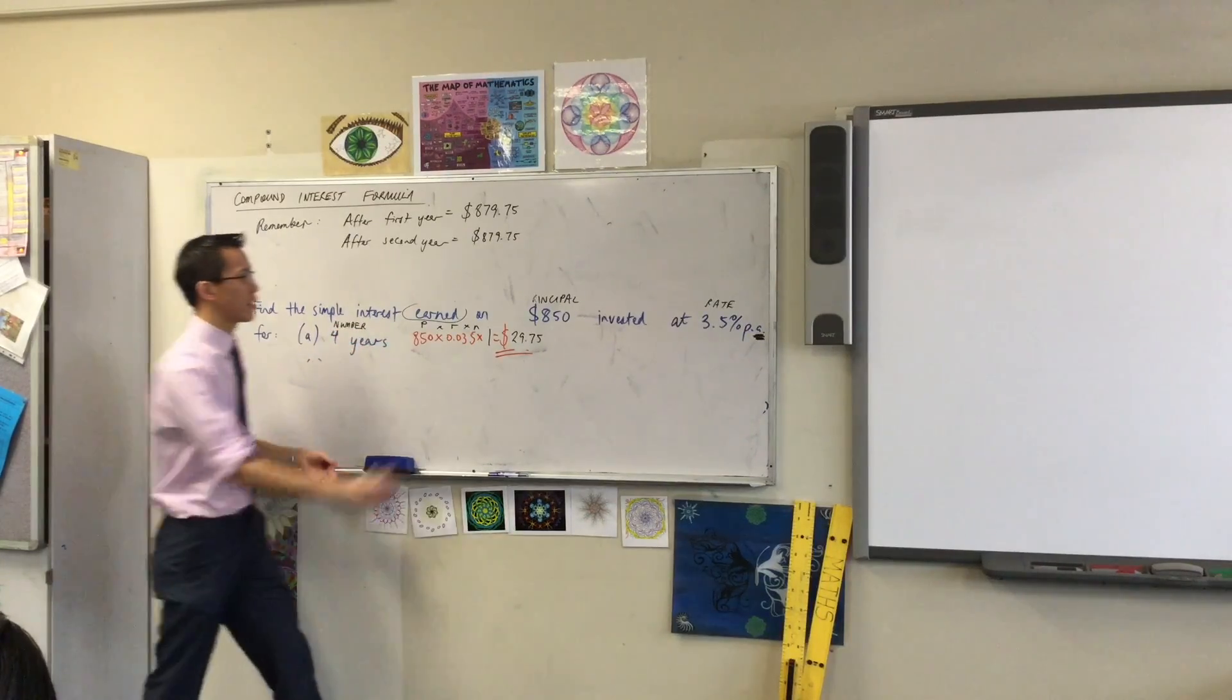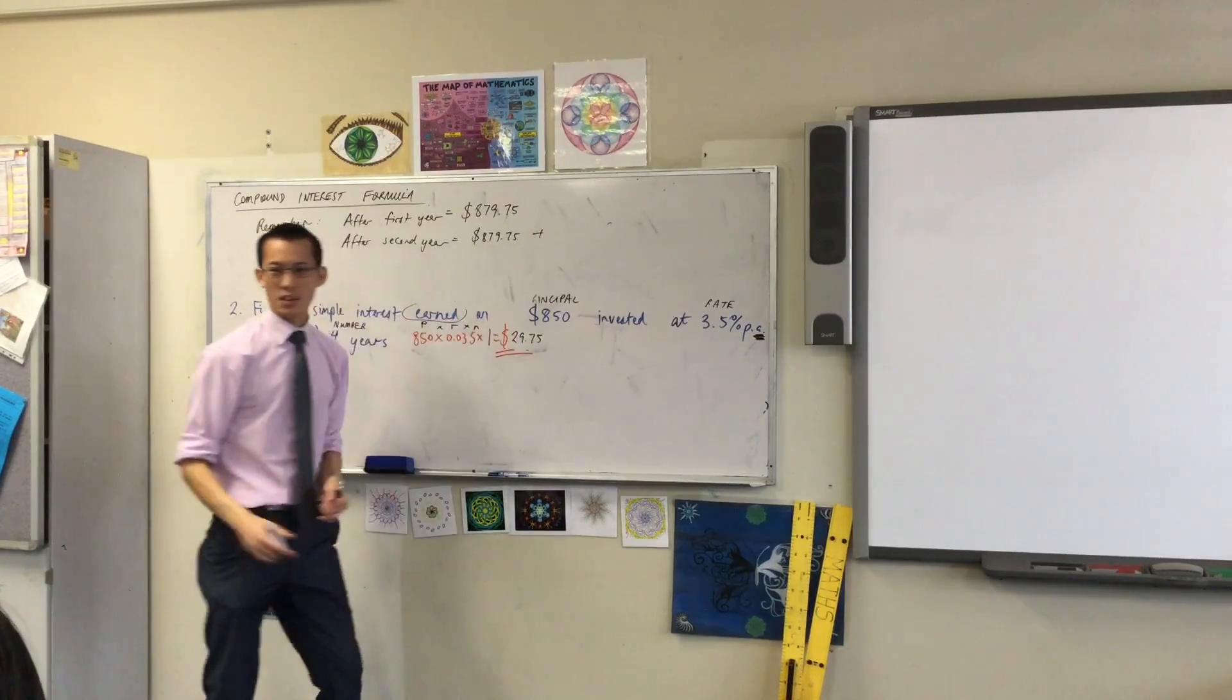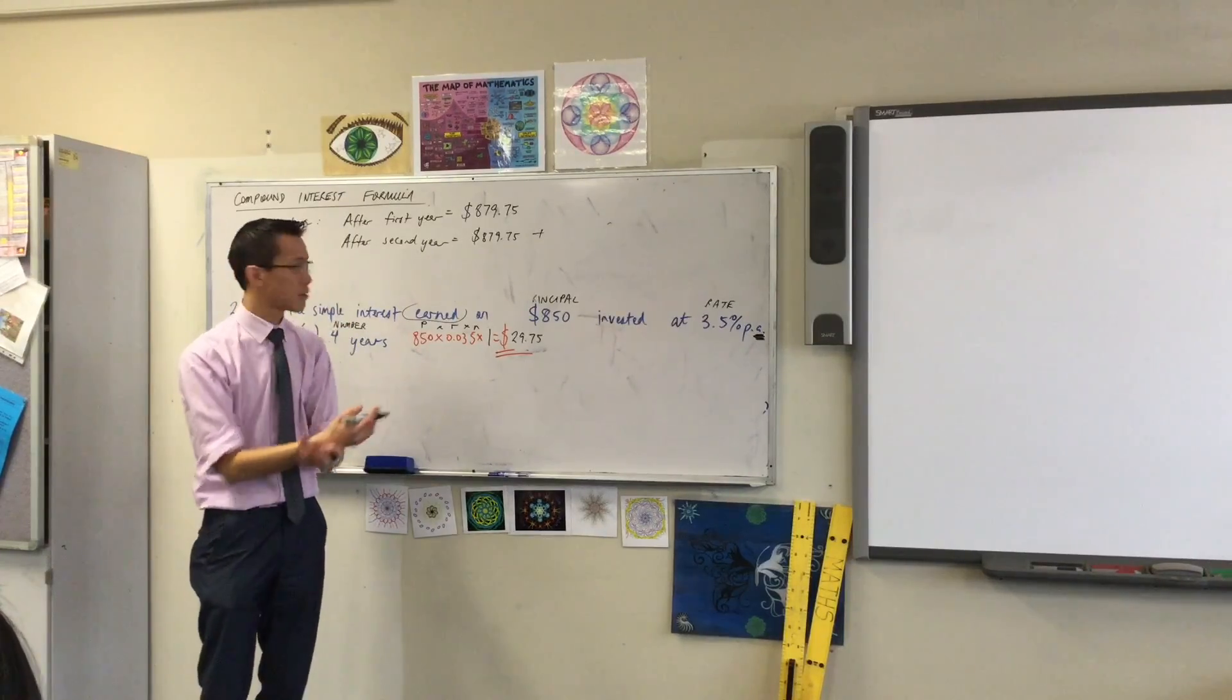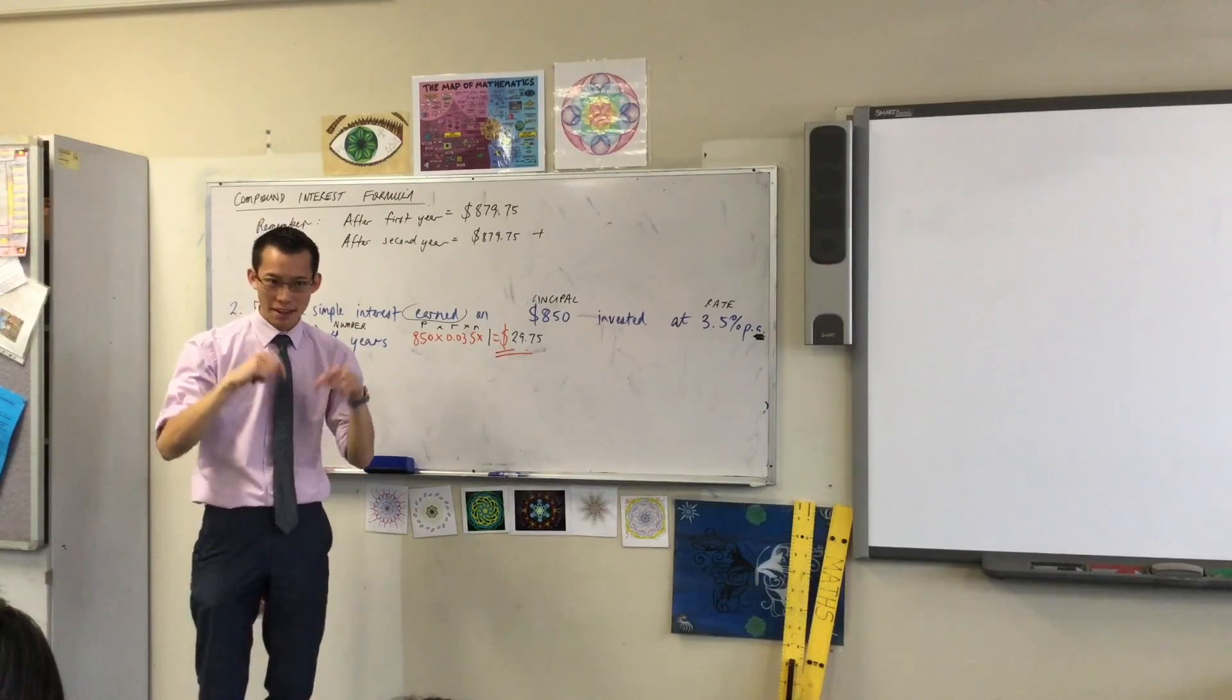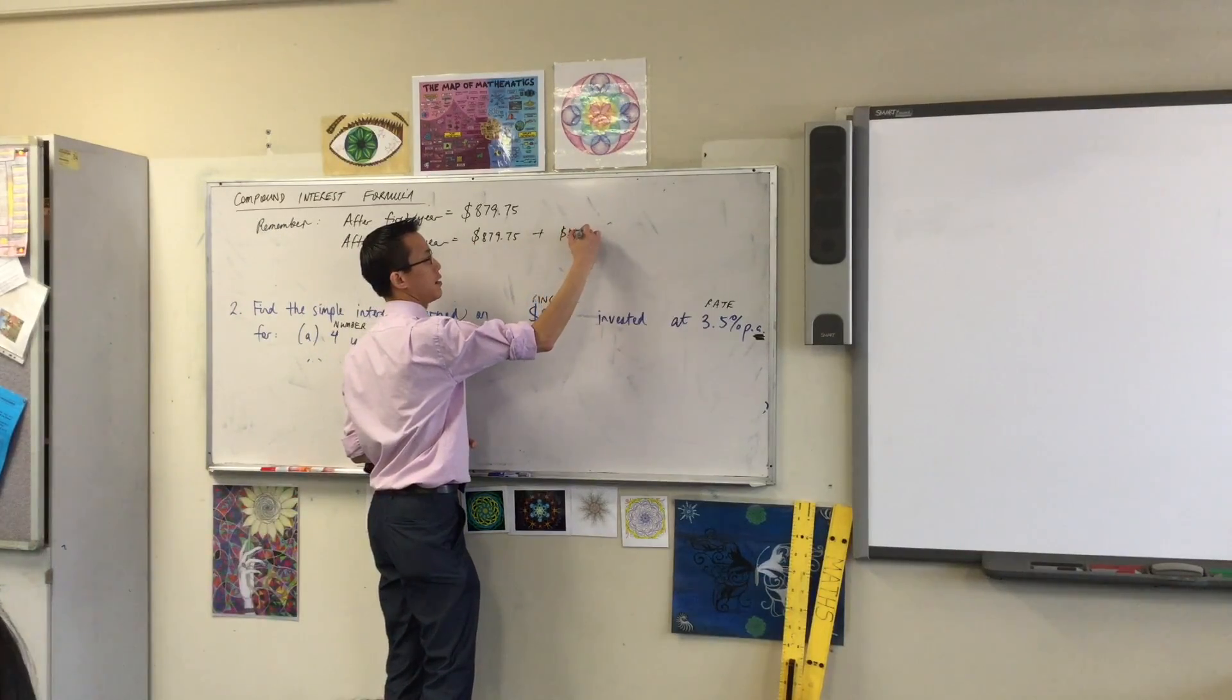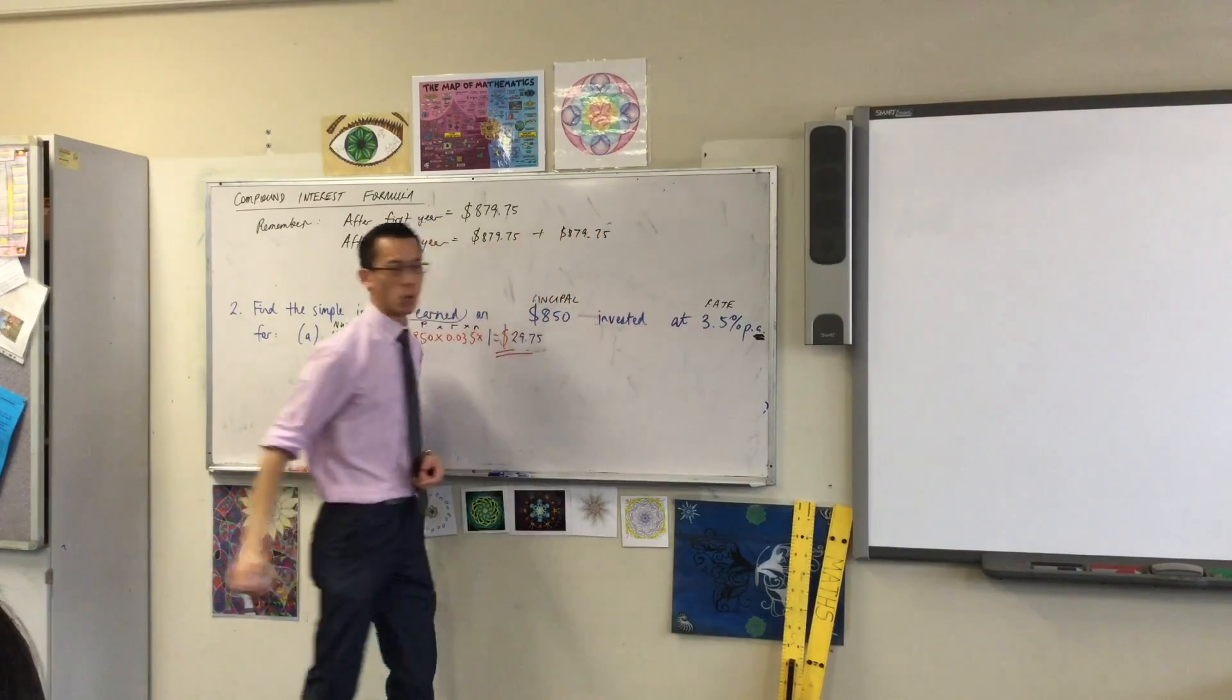You can do it just like simple interest, right? It's going to be principal times the rate times the number of years. What's the principal now at this point in time? Yeah, it's that figure, isn't it? $879.75.